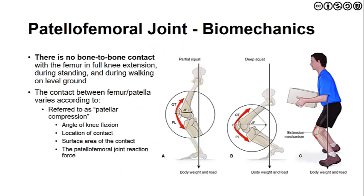This illustration gives a nice visualization of joint forces and line of pull for functional tasks. In a partial squat, you can appreciate the pull from the quad tendon and the patellar ligament compared to a deeper squat. It should be noted there is no bone-to-bone contact with the femur in full knee extension during standing or walking on level ground. The contact between the femur and the patella is better referred to as patellar compression, and it depends on the angle of knee flexion — whether we are beyond or less than 90 degrees — the contact area, and the overall patellofemoral joint reaction force.